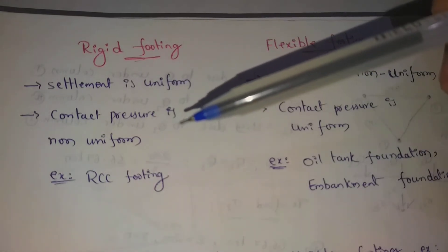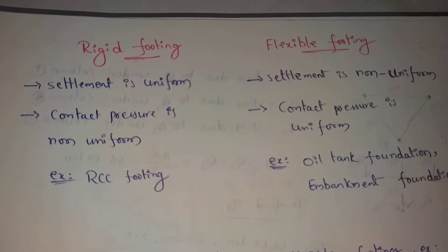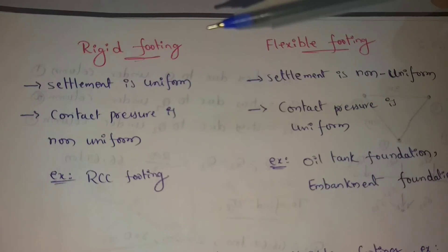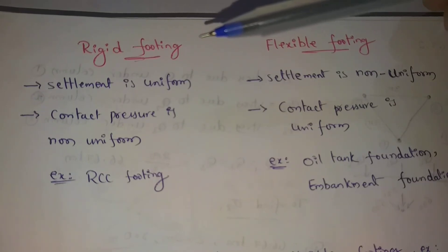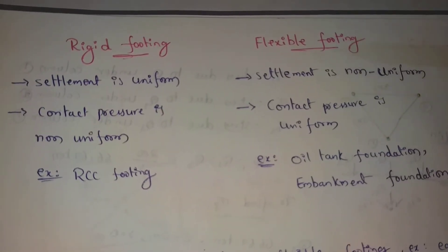For rigid footing, contact pressure is non-uniform. If you choose clay, the contact pressure in the middle is a lower value while the corner sides have a higher value. For sand soil, the contact pressure is also a lower value at the corners, behaving differently from clay in its distribution.